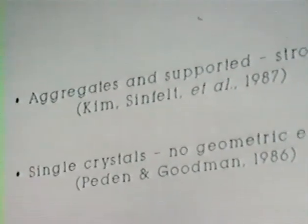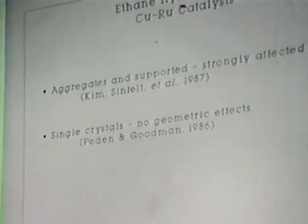The crux of the controversy: when you look at single crystals, as Goodman published in 1986, if you take a single crystal surface of ruthenium and put a little copper on it, you don't apparently get a geometric effect — there's no variation in the turnover frequency for this reaction upon addition of copper. Whereas in a paper in 1987 by Kim, Sinnfeld, and colleagues, looking at spectroscopies of supported and aggregate catalysts, the copper is doing something different in that system than on single crystals, suggesting single crystals may not be a good model.